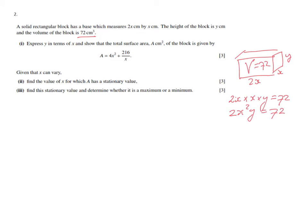Now for the surface area, which is the sum of the areas of all the faces. Starting with the side faces: the area of one side face is x times y, so that's xy, and we have two of them. Then the front and back faces: each is 2x times y, so 2xy, and we have two of those — giving us 4xy. The top and bottom are each 2x by x, and again we have two of them, so immediately that's 4x squared.